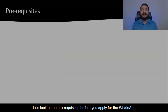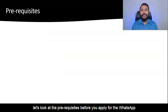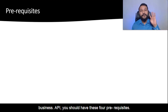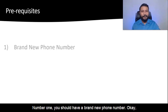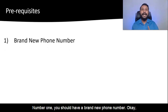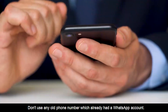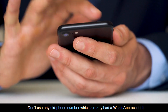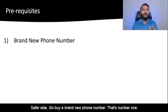Now, first, let's look at the prerequisites. Before you apply for the WhatsApp Business API, you should have these four prerequisites. Number one, you should have a brand new phone number. Don't use any old phone number which already had a WhatsApp account. Safer side, go buy a brand new phone number.